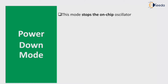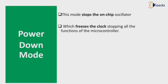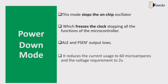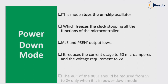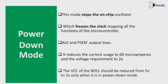The first mode is power down mode. This mode stops the on-chip oscillator and freezes the clock, stopping all functions of the microcontroller. The ALE and PSEN outputs become low, reducing current usage. In regular operation it uses 60 microamperes, which is reduced in power down mode, and the voltage requirement drops to 2 volts. The VCC of the 8051 should be reduced from 5 volts to 2 volts only when in power down mode.